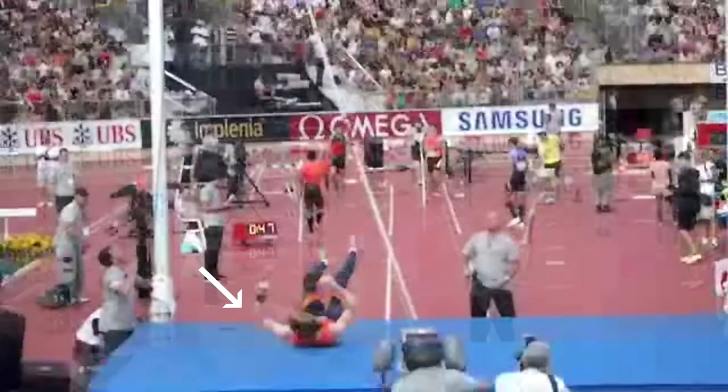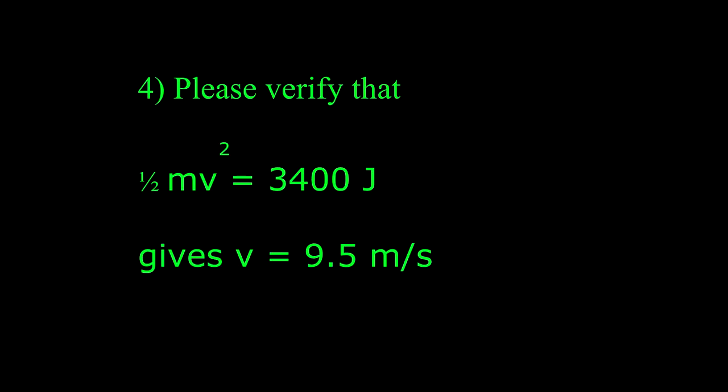As the person falls back to the ground, 3400 joules of gravitational energy is converted back into kinetic energy of motion. Question 4: please verify that one half mv squared equals 3400 joules gives v equals 9.5 meters per second.